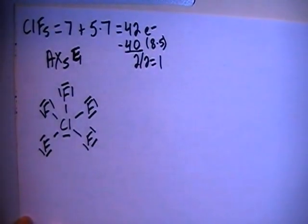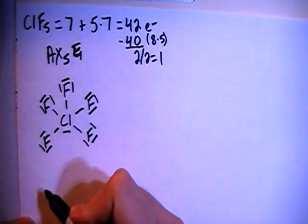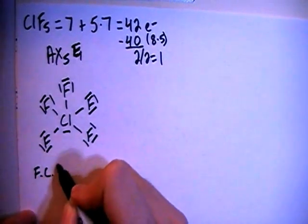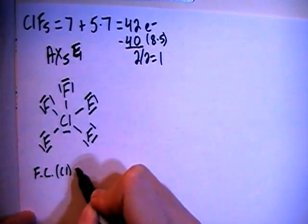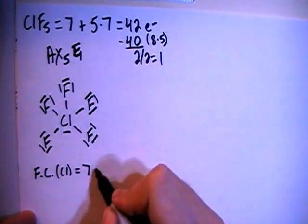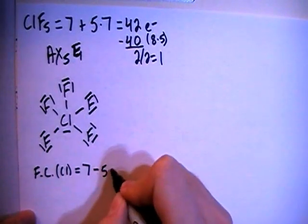And that should be our final structure. Now let's go ahead and verify this by calculating the formal charge. So the formal charge on the central chlorine is going to be equal to the 7 valence electrons brought in minus the 1, 2, 3, 4, 5 bonds minus 1, 2 non-bonding electrons for a formal charge of 0.